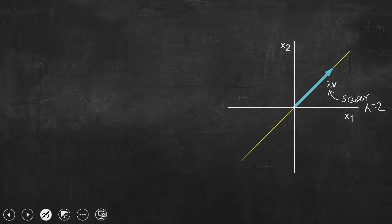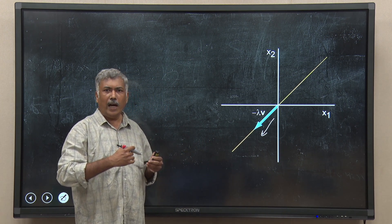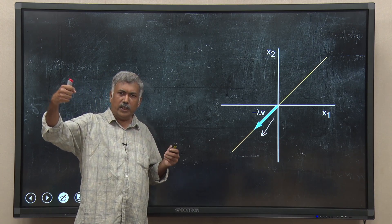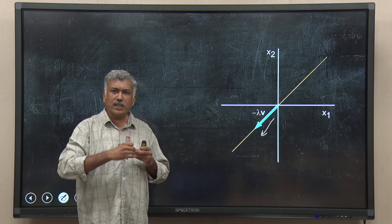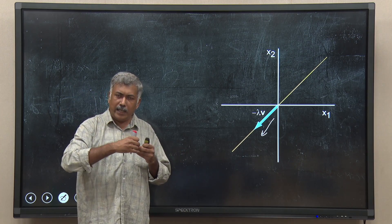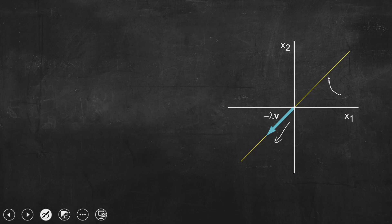That means I want to stretch this original vector v and make it double in size. Or suppose I take a negative value like minus 2, so that the vector's direction changes to the opposite direction. In both cases, I want to either stretch it, squeeze it, or flip it in the opposite direction, but always along the same line — the direction of the original vector, this yellow line. This is called the span of the original vector.